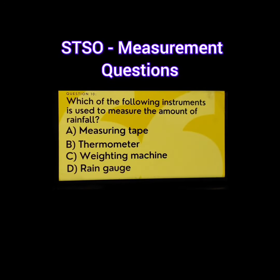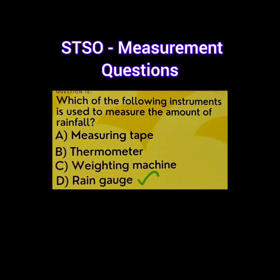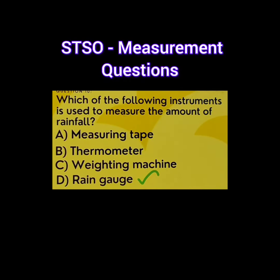Question number 10. Which of the following instruments is used to measure the amount of rainfall? The options are A. Measuring tape, B. Thermometer, C. Weighing machine, D. Rain gauge. The correct answer is D. Rain gauge.